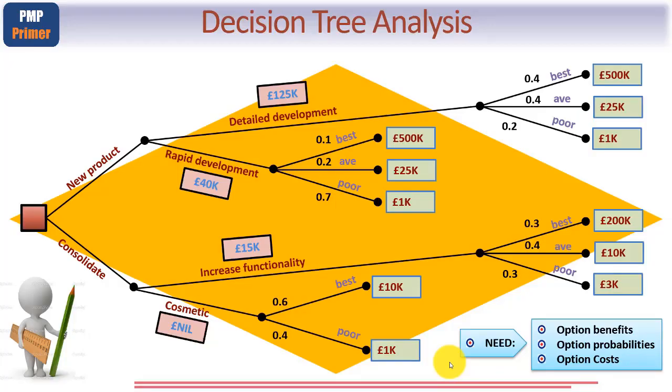Now first of all, whenever you use decision tree analysis, there are three things you need up front. Of course you need the diagram, and as you can see this is simply showing branches, hence the analogy of trees.